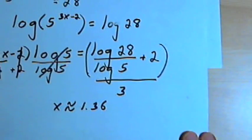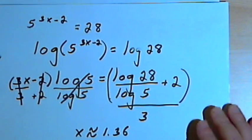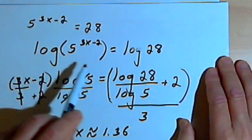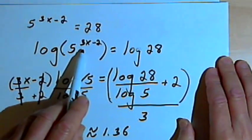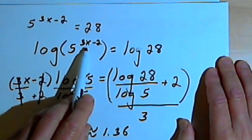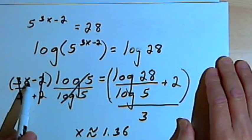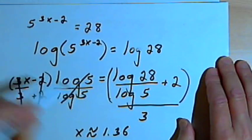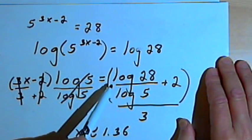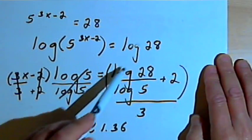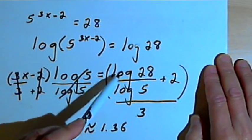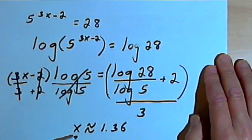So let me just review these steps. All I did was take the log of both sides of the equation. Then I was able to take the exponent in the logarithm on the left and make that a coefficient. Then the only thing left to do was to isolate the x and use the calculator to find what the whole expression on the right side was equal to, and that gave us the approximate answer.